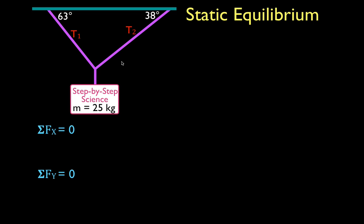We want to sum up the forces. The first step is we are going to draw in all the forces. I like to think of all the forces acting at one point, because we want to know the tension in this cable and the tension in this cable. The first force we're going to draw in is the force of gravity, mg, which points straight down in the negative y-direction. We also have the force of tension in cable one and the force of tension in the other cable — those are the two we're trying to solve for.